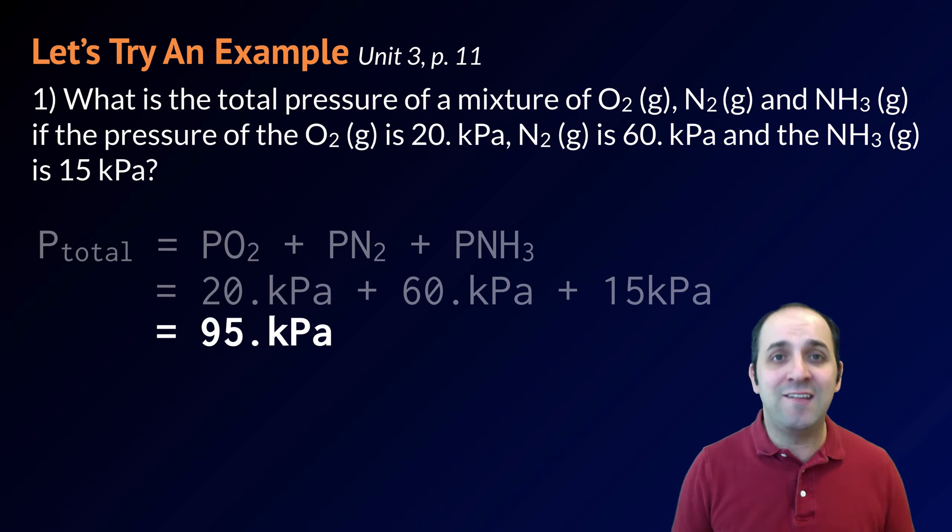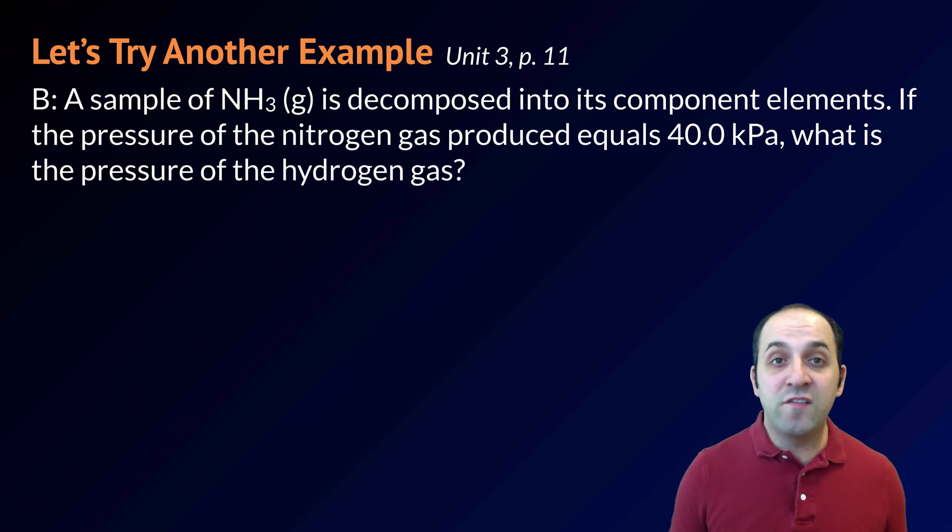This is a pretty easy Dalton's law problem. Let's go in and look at a more complicated version. This question is on page 11 of our unit 3 packet. A sample of ammonia is decomposed into its component elements. If the pressure of the nitrogen gas produced is 40 kilopascals, what is the pressure of the hydrogen gas? Pause the video, see if you can solve this one, and when you're ready, let's go through the solution.